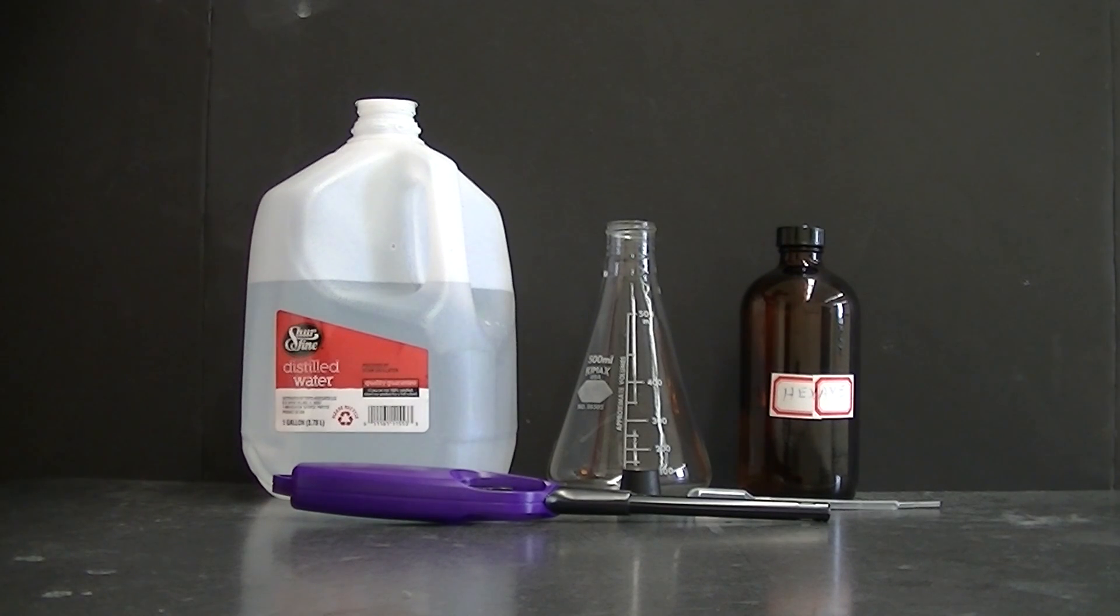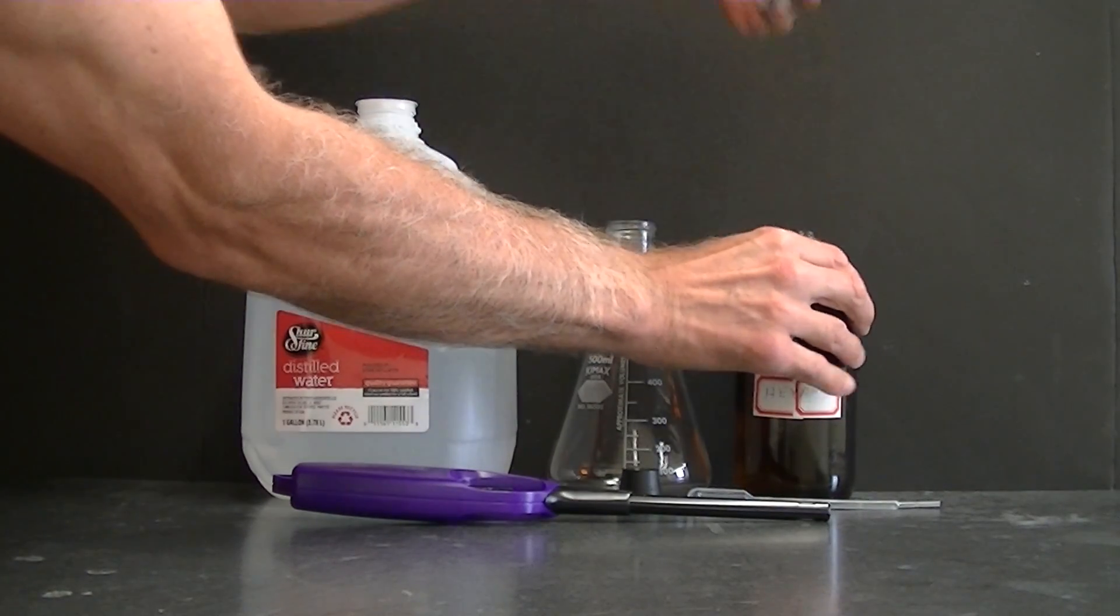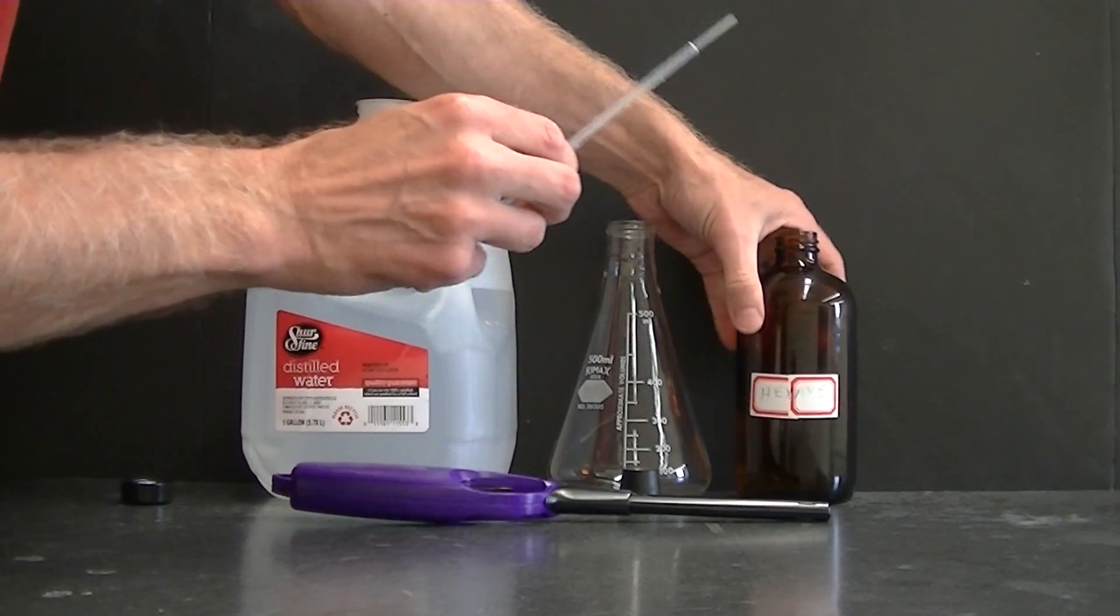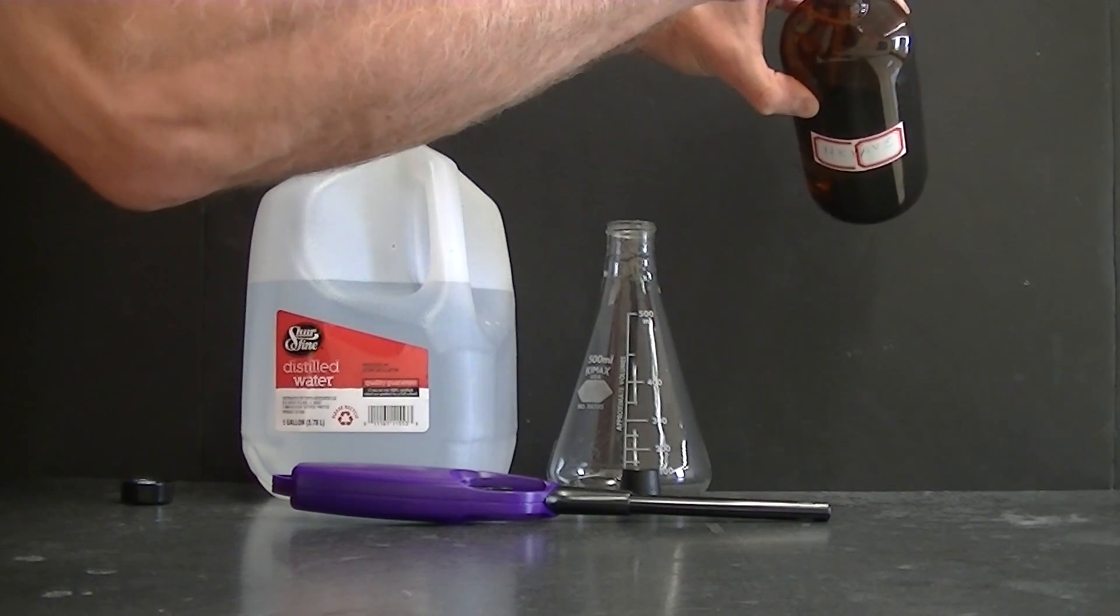Here's how you do this trick where you get the illusion that water can be lit on fire. The secret is simply to add a flammable liquid, about a half a mil, to a 500 mil flask.